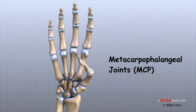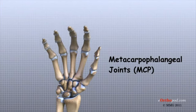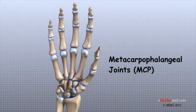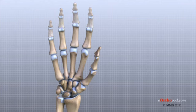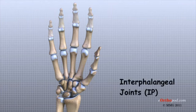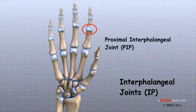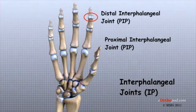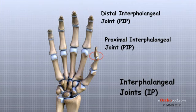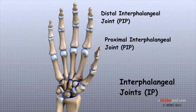These joints are called the metacarpophalangeal joints, or MCP joints. The MCP joints work like a hinge when you bend and straighten your fingers and thumb. The three phalanges in each finger are separated by two joints called interphalangeal joints, or IP joints. The one closest to the MCP joint is called the proximal IP joint, or PIP joint. The joint near the end of the finger is called the distal IP joint, or DIP joint. The thumb only has one IP joint between the two thumb phalanges. The IP joints also work like hinges when you bend and straighten your fingers and thumb.